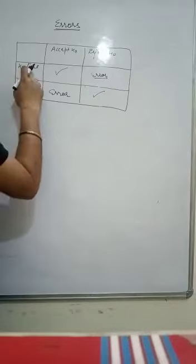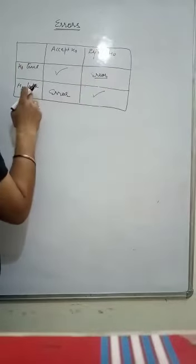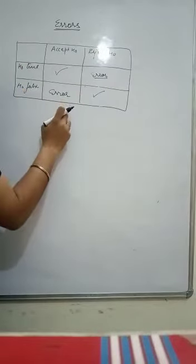There are two types of errors. When x is 0 true, we are rejecting it and when x is 0 false, we are accepting it.